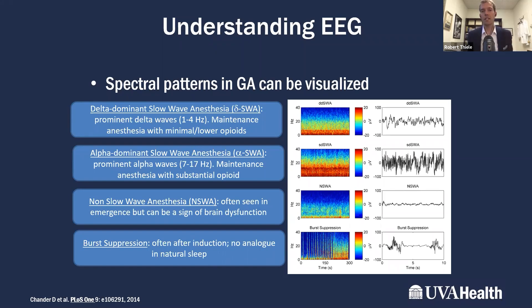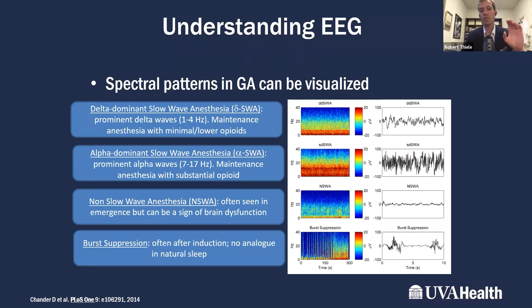Burst suppression is a concept increasingly on everyone's mind as we think about the potential downside of over-anesthetizing patients. Burst suppression is when you have periods of time where you basically have a flat EEG tracing — no waveform at all. That appears as blue in the compressed spectral array because there's no power at any frequency. In patients experiencing burst suppression, you have periods where the screen is all blue, then some waveform activity, then back to blue, as shown on the compressed spectral array at the bottom.